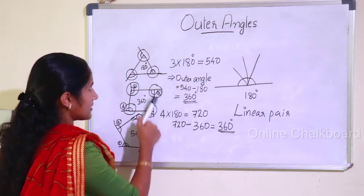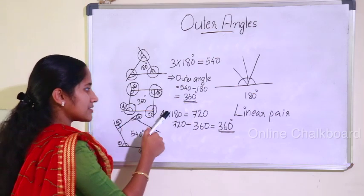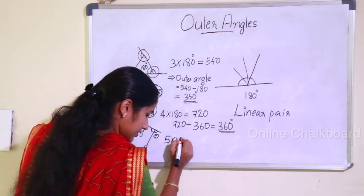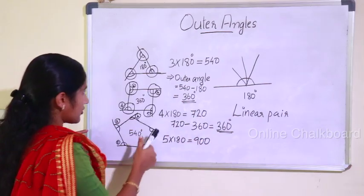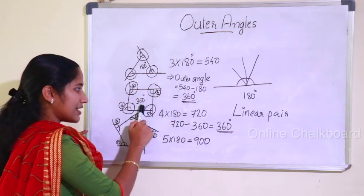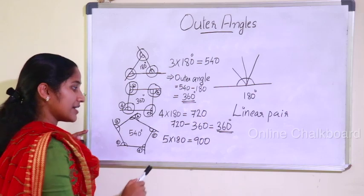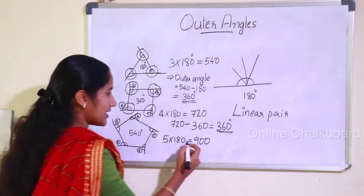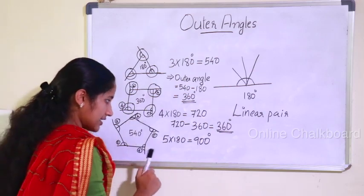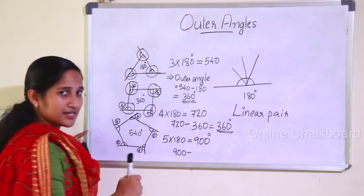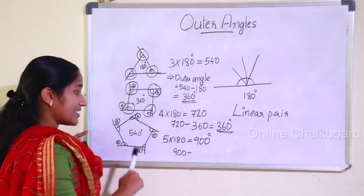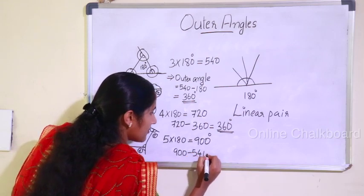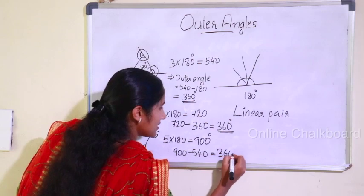Let's do the pentagon at the same time. A triangle has 3 linear pairs, a quadrilateral has 4 linear pairs, so a pentagon has 5 linear pairs. That is 5 × 180 = 900 degrees. The sum of the interior angles of a pentagon is 5 × 180, which equals 900 degrees. And again, the exterior angle sum gives us 360 degrees.